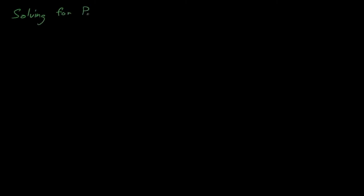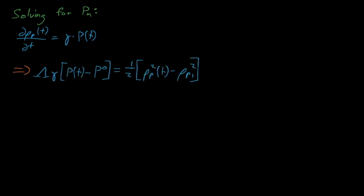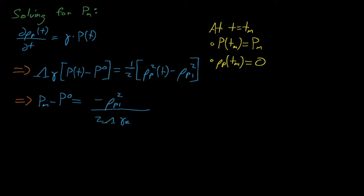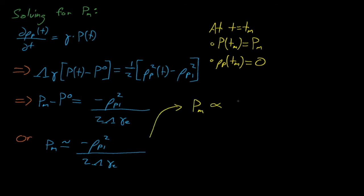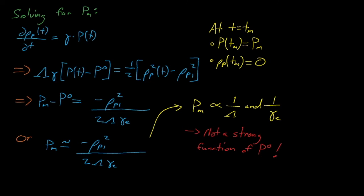From here, we can solve for P_m. Recalling that d-rho_P/dt equals gamma times P(t), we substitute in the power and evaluate the expression at time t equals T_m. This turns our P(t) term into P_m and our rho(t) term into zero. Thus the change in the reactor's power from the start of the transient to its peak is equal to negative rho_P1 squared divided by 2*lambda*gamma_E. Since the maximum power is much greater than the initial power, the maximum power is approximately equal to negative rho_P1 squared divided by 2*lambda*gamma_E. This means the maximum power is inversely proportional to lambda and gamma_E, and is not a function of the system's initial power.